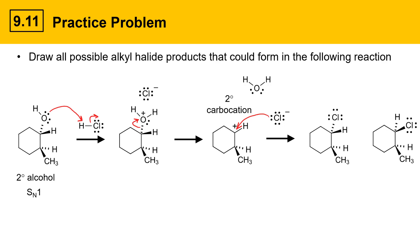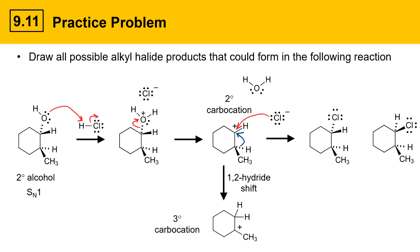The other possibility you always have to look for is whether this carbocation could rearrange. In this case, there's an H that could move over with a pair of electrons to give a more stable carbocation. A 1,2-hydride shift could occur, where the hydrogen moves with its bonding pair of electrons to give a new carbocation. This new carbocation is a tertiary carbocation, which is more stable. That tertiary carbocation could get attacked by Cl⁻, bonding with it and creating a new alkyl halide. This molecule is achiral — it doesn't have any stereogenic centers — so no dashes or wedges are needed. Here are the three possible alkyl halide products.